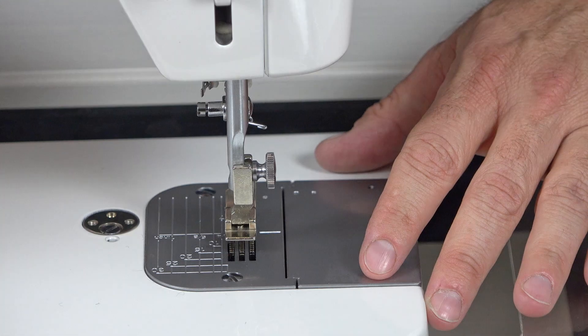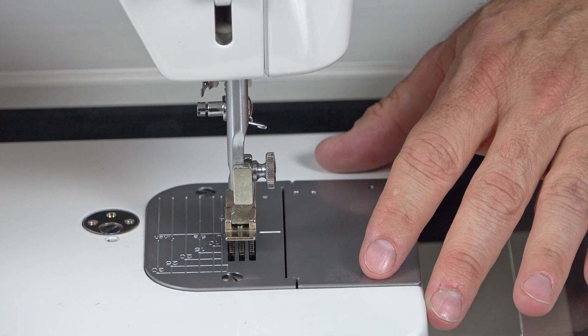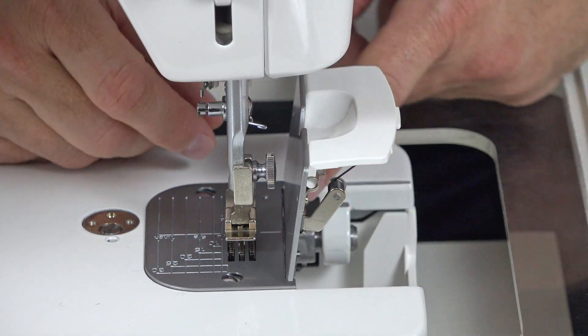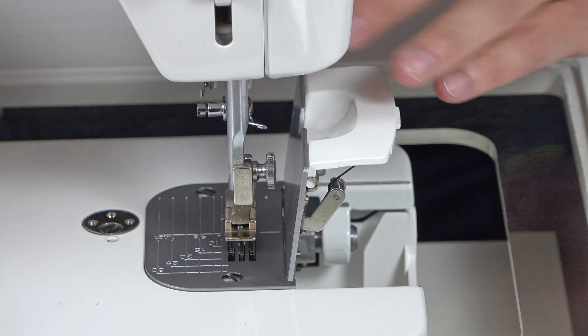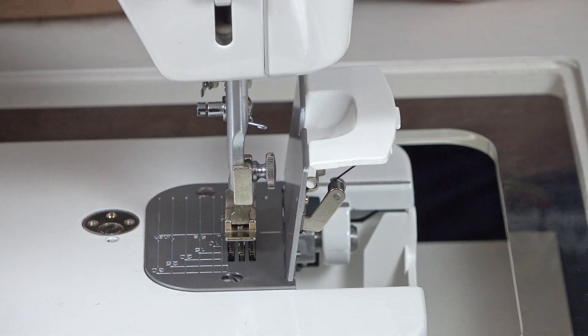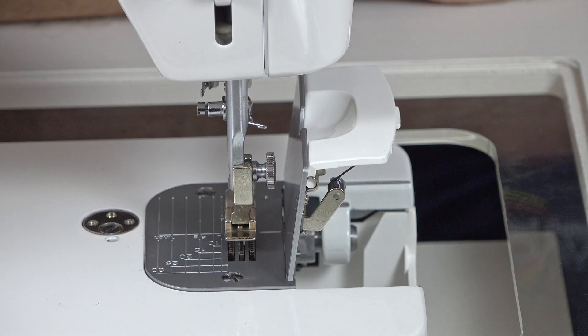On your Brother, your Janome, other brands, Baby Lock, and so on, you can use the hinge that's already here to install your AccuStitch plate. But on the Juki, we include a small spring steel hinge that needs to be changed out.